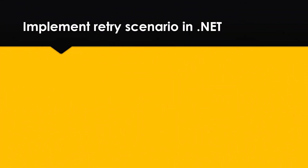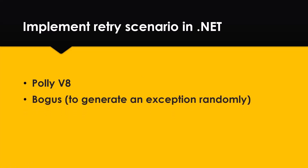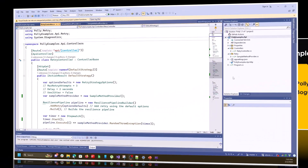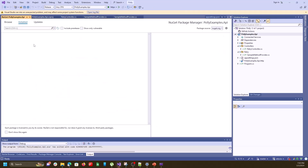In this video I want to implement a retry scenario in .NET 8. I will use Polly version 8 and Bogus to generate exceptions randomly. I've created a .NET 8 Web API and installed Polly and Bogus from the NuGet package manager.